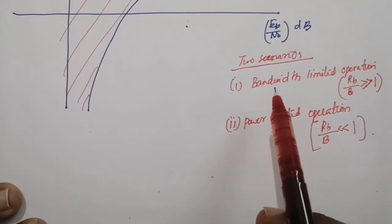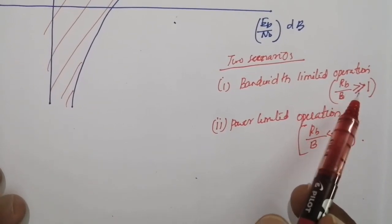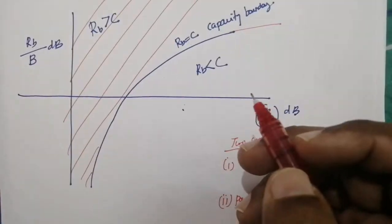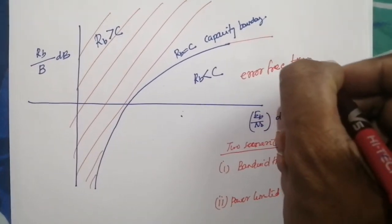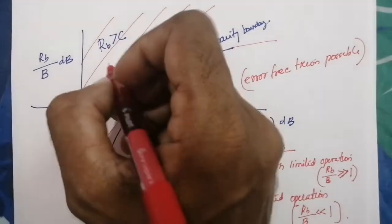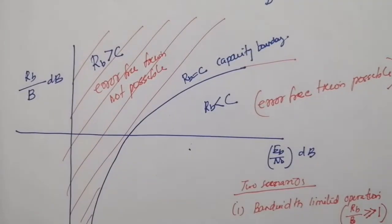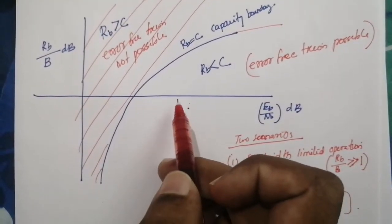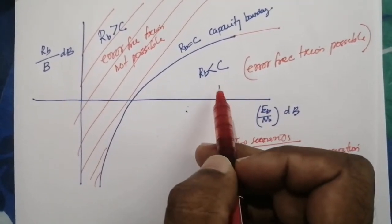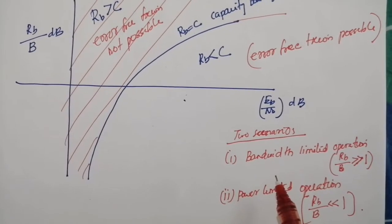We consider two scenarios: bandwidth-limited operation and power-limited operation. In bandwidth-limited operation, we have a limited bandwidth, so Rb/B is much greater than 1 and we operate in the high Rb/B region. To remain in the region Rb less than C for error-free transmission, a large value of Eb/N₀ — that is, a large average power — is required. This scenario is preferred when we have limited bandwidth available.